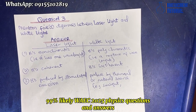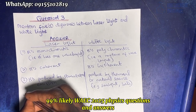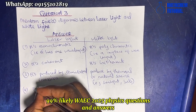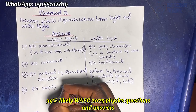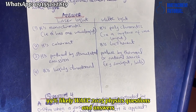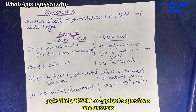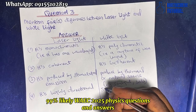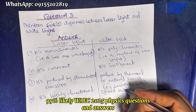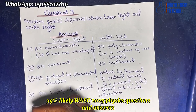Or probably a bulb. Number four: laser light is highly directional. White light spreads out in all directions.